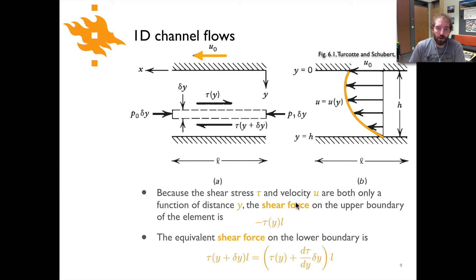The shear force on the upper boundary of the element, the top of it here, is going to be simply minus tau of y times l, and l is the length over which that shear force is acting. The equivalent shear force on the lower boundary at tau of y plus delta y times l, the shear force down here at this lower elevation within the channel, is equal to tau of y plus delta y times l, which is also equal to tau of y plus d tau/dy times delta y, this little element over which the change in shear stress would occur, times the length again of that side on which the shear stress is acting.